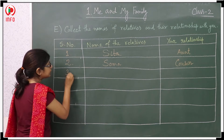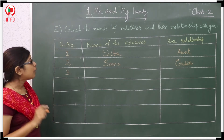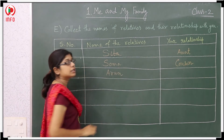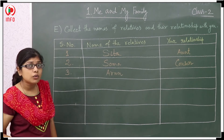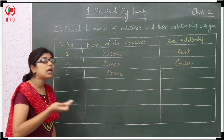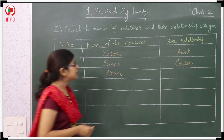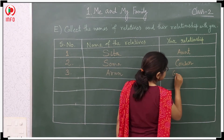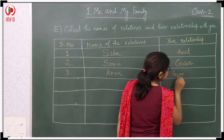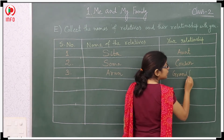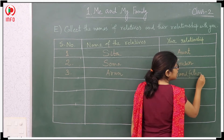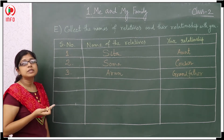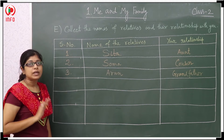Next I would like to write the next name. Now I am writing here Arun. Who is Arun? What is the relationship between Arun and you? He is the grandfather. So I will write here grandfather — G-R-A-N-D-F-A-T-H-E-R. Like this you have to write the different names and the relationships also.